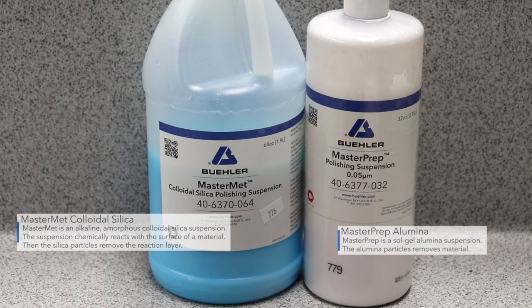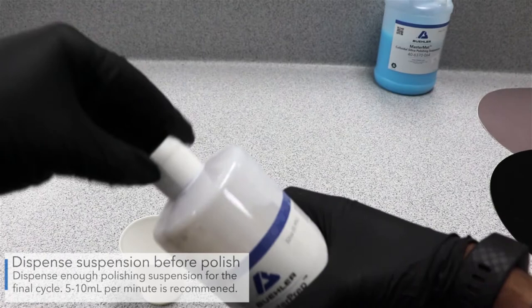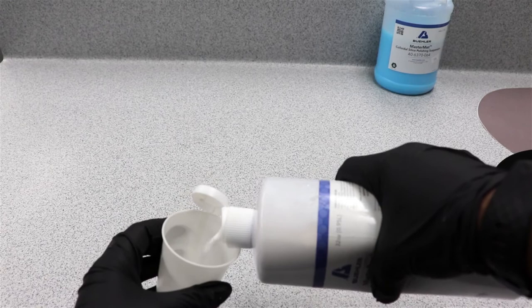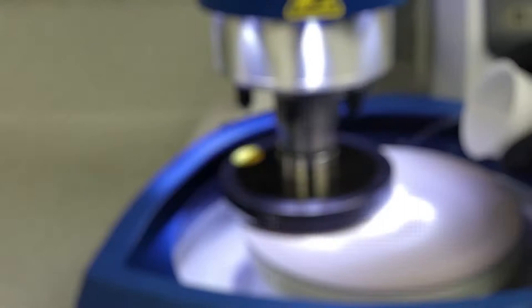Before final polish, dispense enough final polishing suspension for the polishing cycle. Typically, 5 to 10 milliliters per minute is recommended. Remember to wet the cloth with water before the cycle begins. This helps the polishing suspension spread.